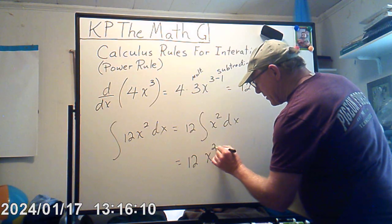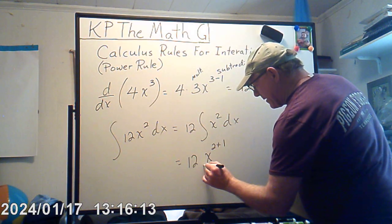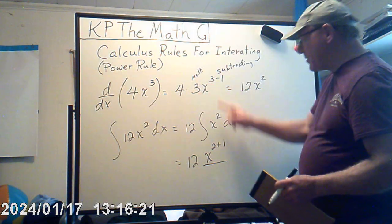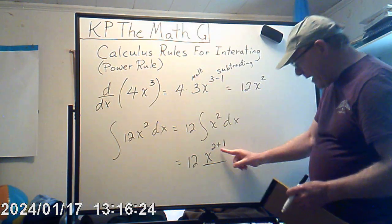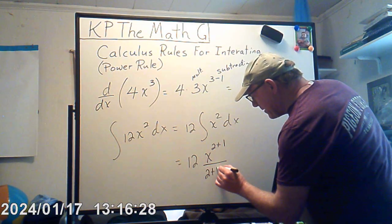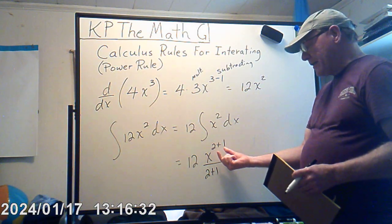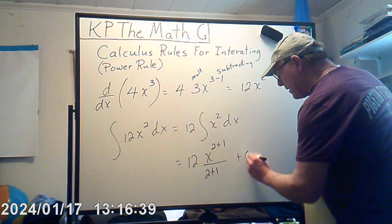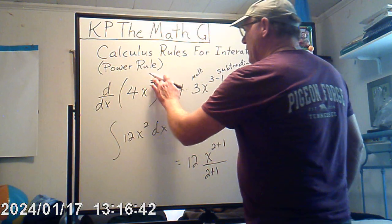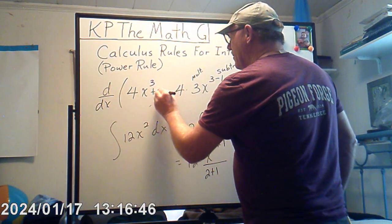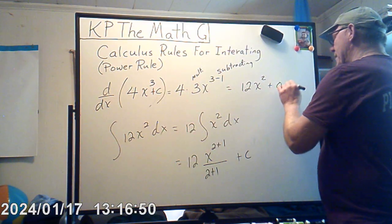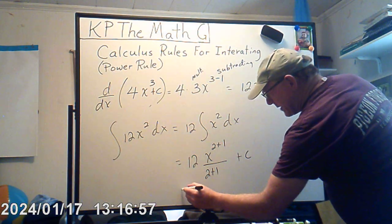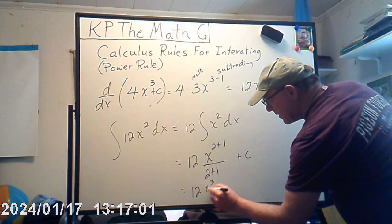We're going to take the 2 and add 1 to it. But instead of multiplying, we're going to divide — we're doing the opposite of what we did with the derivative. So instead of multiplying by that same exponent, we're dividing by it. Plus C. The derivative of a constant is zero, which is why that constant disappeared originally, leaving just 12x squared.